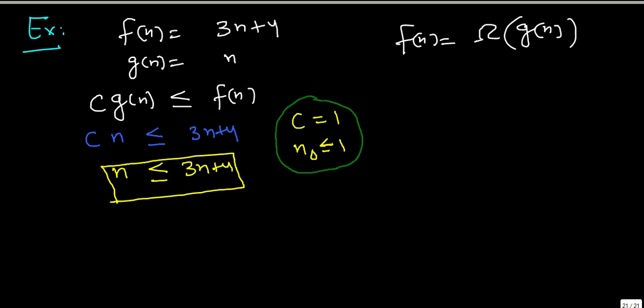that is C equal to 1 and n₀ - I think I have done a mistake here, I will correct it right now. So this n₀ should be greater than or equal to 1 and for this condition is being satisfied. So we can say that F(n) equals Omega of G(n).